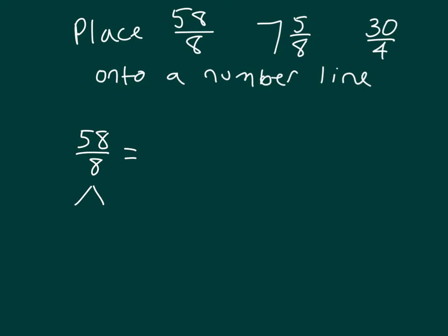Count by 8 eighths, we have 8 eighths, 16 eighths, 24 eighths, 32 eighths, 40 eighths, 48 eighths, 56 eighths, and 56 eighths is equal to 7 wholes. It would just be 2 more eighths.